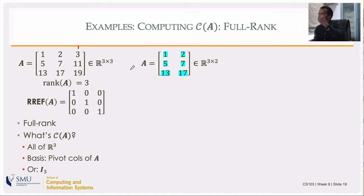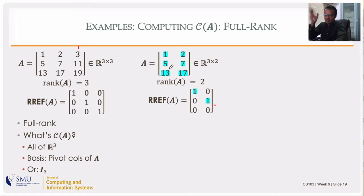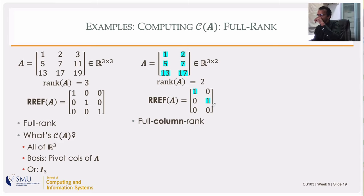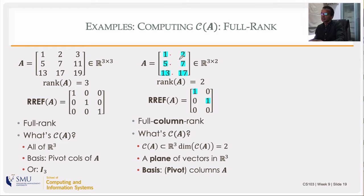Now consider a similar example but keeping only the first two columns — a 3×2 matrix. The rank is two since there are two columns and they are linearly independent. The reduced row echelon form becomes an identity-like matrix at the top with zero rows at the bottom. The column space has each vector with three components, so it's a subspace of ℝ³ — specifically a two-dimensional subspace, some plane in ℝ³.